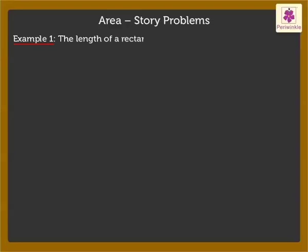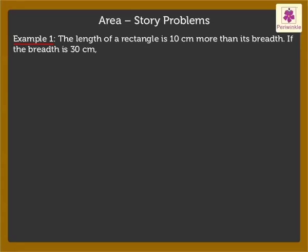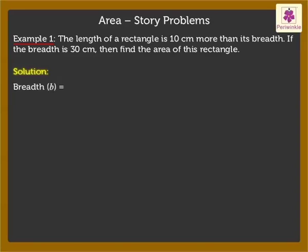The length of a rectangle is 10 centimeters more than its breadth. If the breadth is 30 centimeters, then find the area of this rectangle. We know that its breadth is equal to 30 centimeters.